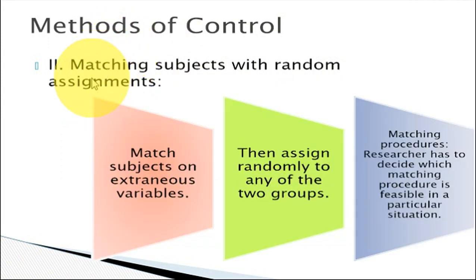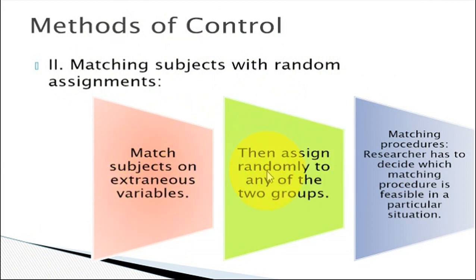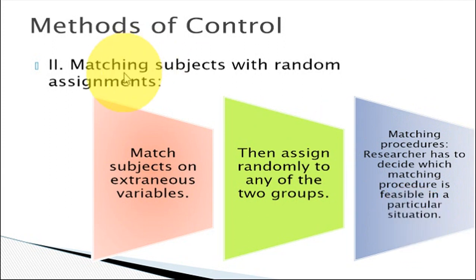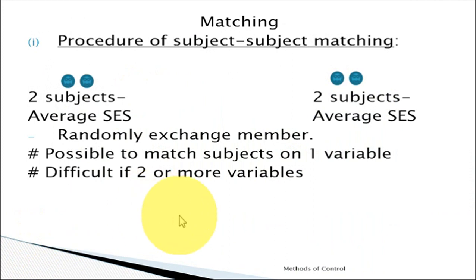Number two is matching subjects with random assignment — match subjects on an extraneous variable and then assign them randomly into either of the two groups. The researcher has to decide which matching procedure is feasible in a particular situation, as matching can be done in different ways.